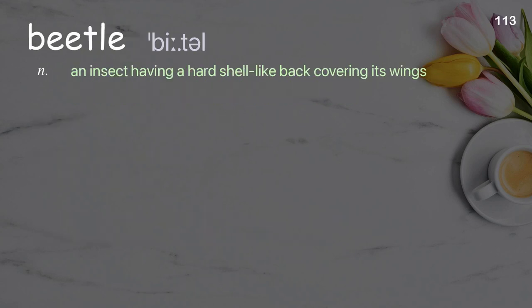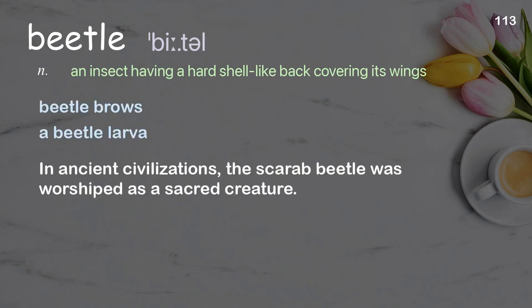Beetle: an insect having a hard shell-like back covering its wings. Examples: beetle brows, a beetle larva. In ancient civilizations, the scarab beetle was worshipped as a sacred creature.